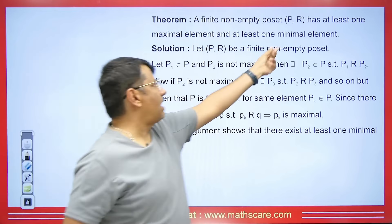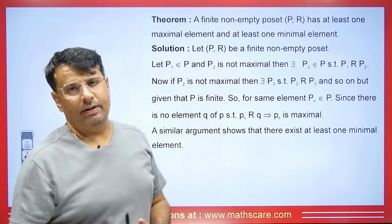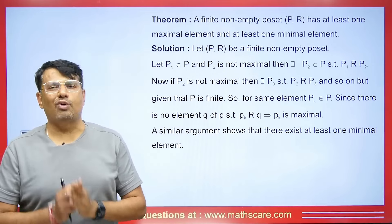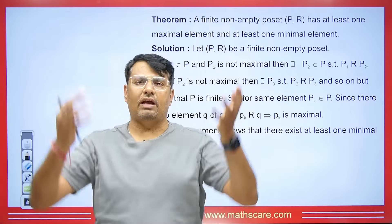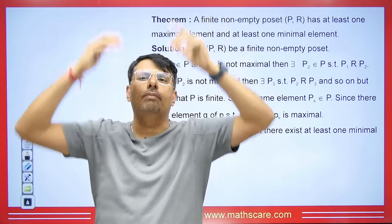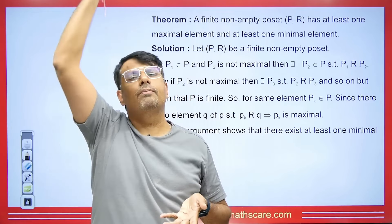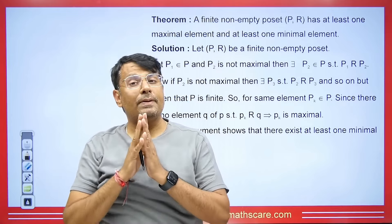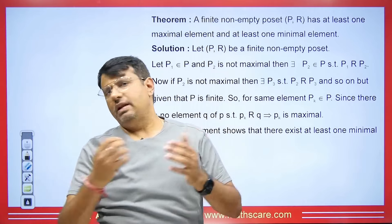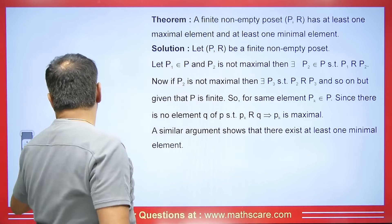There is a theorem: if we have a finite non-empty poset, it has at least one maximal element and one minimal element. If we make a Hasse diagram that is finite, it will stop somewhere — where it stops, that will be the maximal element. Where it starts, that will be the minimal element. An infinite Hasse diagram would have no maximal element.